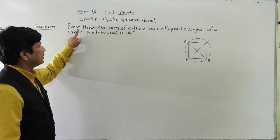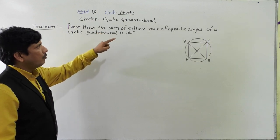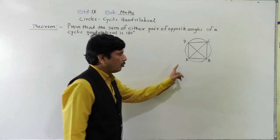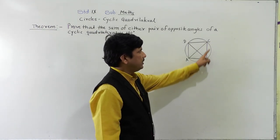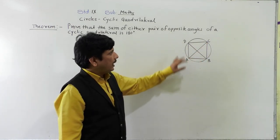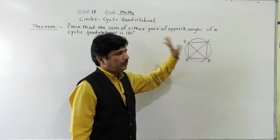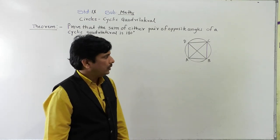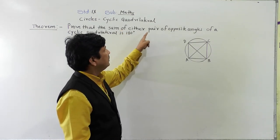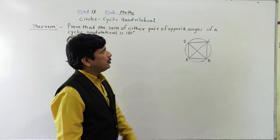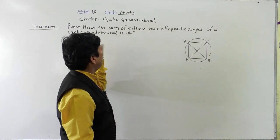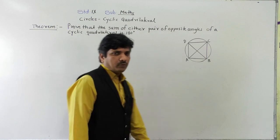What they are asking: the sum of either pair of opposite angles. Here, about quadrilateral ABCD, angle A and angle C are opposite to each other, and angle D and angle B are opposite to each other. So, the sum of either pair of opposite angles of a cyclic quadrilateral is 180 degrees.